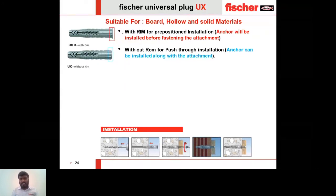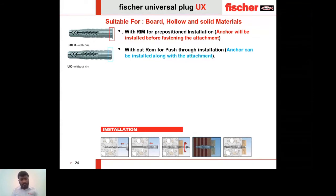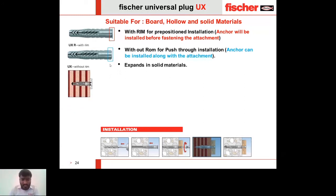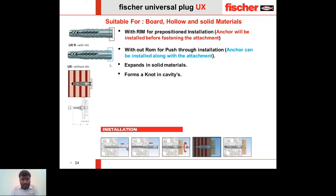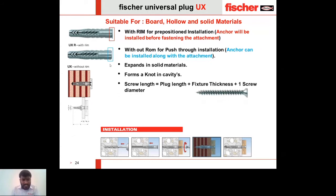The UX anchor has an expansion property in solid materials like concrete, aerated concrete, clay blocks, and mud blocks. It forms a knot in cavity materials — for example, when fixing against a gypsum board or wooden panel, a knot forms on the rear side of the cavity material. This will be shown in a short video for better understanding.